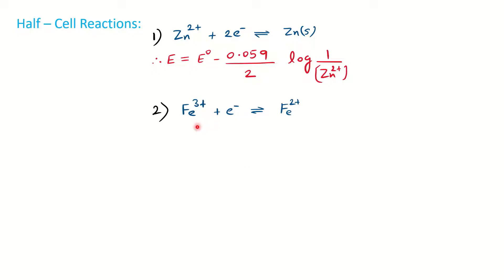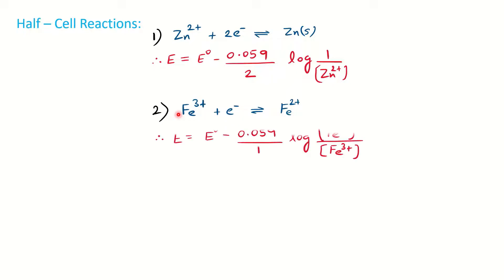Similarly, for the redox reaction where Fe³⁺ is going to reduce into Fe²⁺: since Fe³⁺ is absorbing the electron, it is the oxidizing agent. You can write E = E° minus (0.059 / n), where n is 1. Log of the concentration of Fe²⁺ (reducing species) divided by the concentration of Fe³⁺ (oxidizing species) — both are ions, so we write both concentrations.